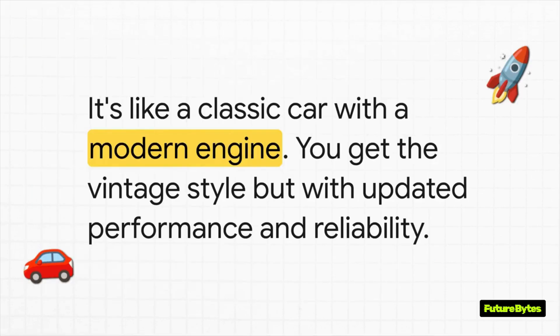The best way to think about this is like a resto-mod car — when someone takes a beautiful classic 1960s Mustang, keeps that amazing body, but under the hood they drop in a brand new high-performance engine, modern brakes, a new suspension, the whole deal. You get all the classic style but with today's performance. That's the dream for Reunion 7.